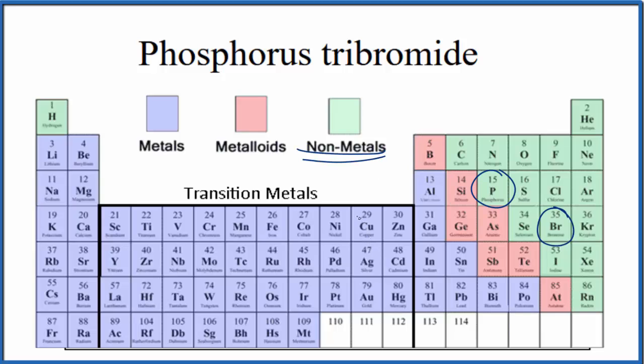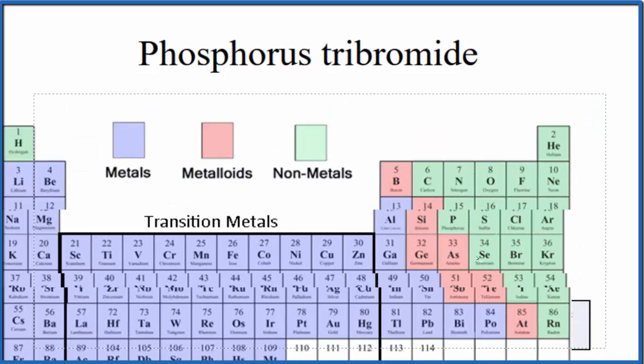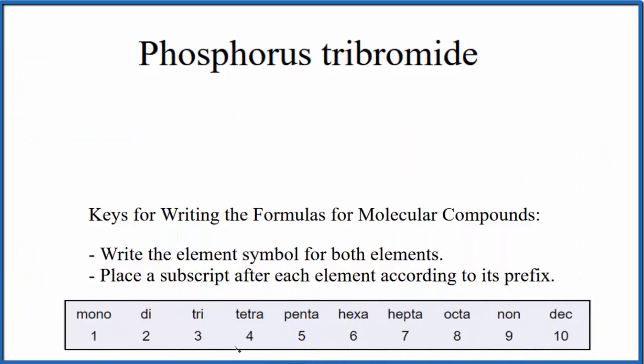That means we have a molecular compound, also called a covalent compound. So to write the formula for phosphorus tribromide, we can use these rules right here.